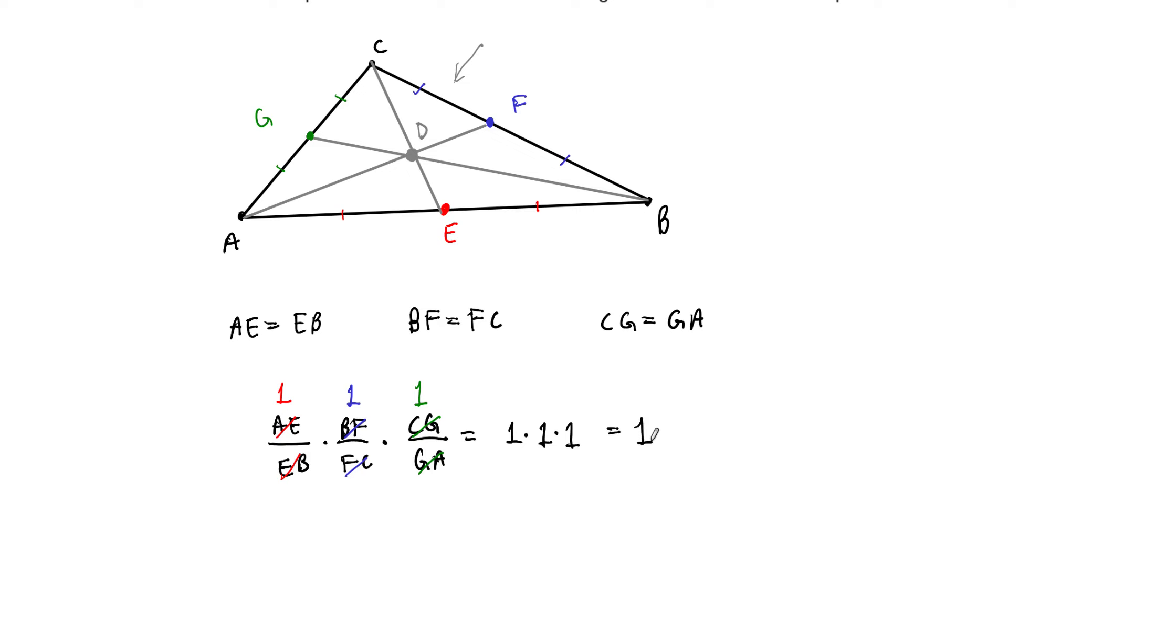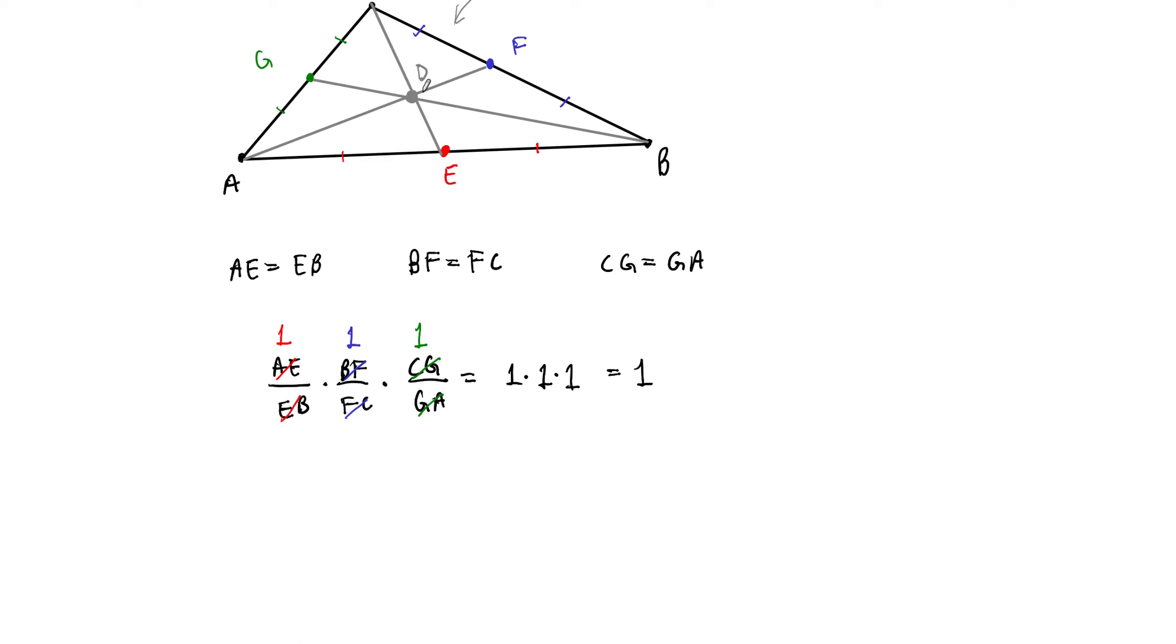Therefore, the product of the ratios of these sub-side lengths is equal to 1. And then Ceva's theorem tells us if this product is 1, if the product of these ratios is 1, then the line segments that connect the opposite vertex to that point, those lines must be, they must intersect in a single point.